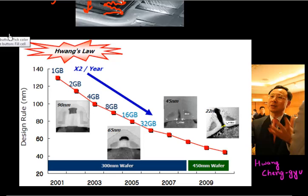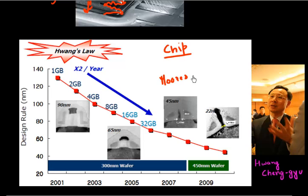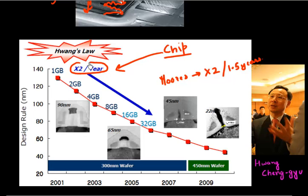One key growth driver is the capacity available per chip. The amount of storage available in a flash memory chip has far outpaced the growth seen in the number of transistors in microprocessors. Remember Moore's Law says you see a doubling of capacity every 18 months or 1.5 years. But in the world of flash, because of this tremendous growth in demand, the number of bits or capacity available per chip has doubled every year, all the way from 2001 through 2009 or 2010. Currently you can buy up to 64 gigabytes of flash storage in one single chip.